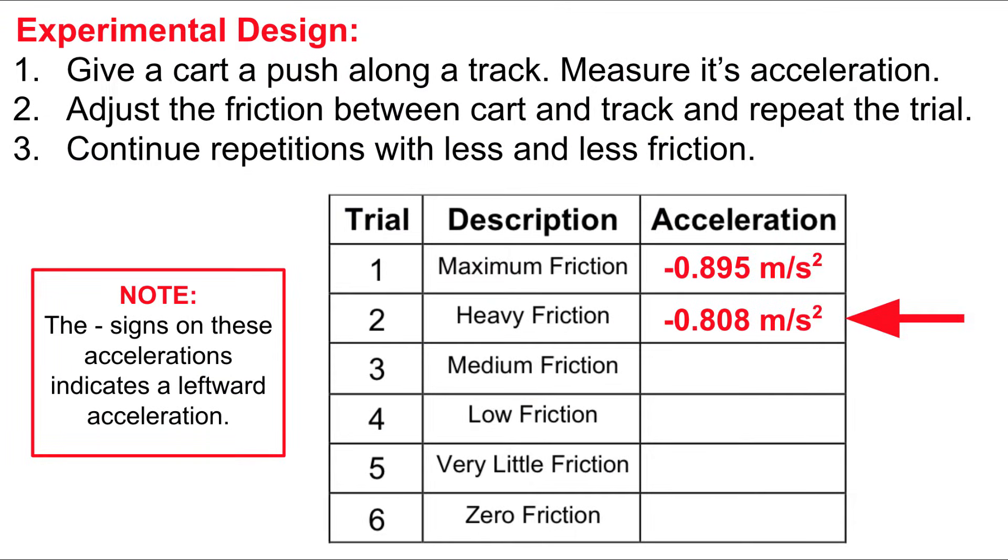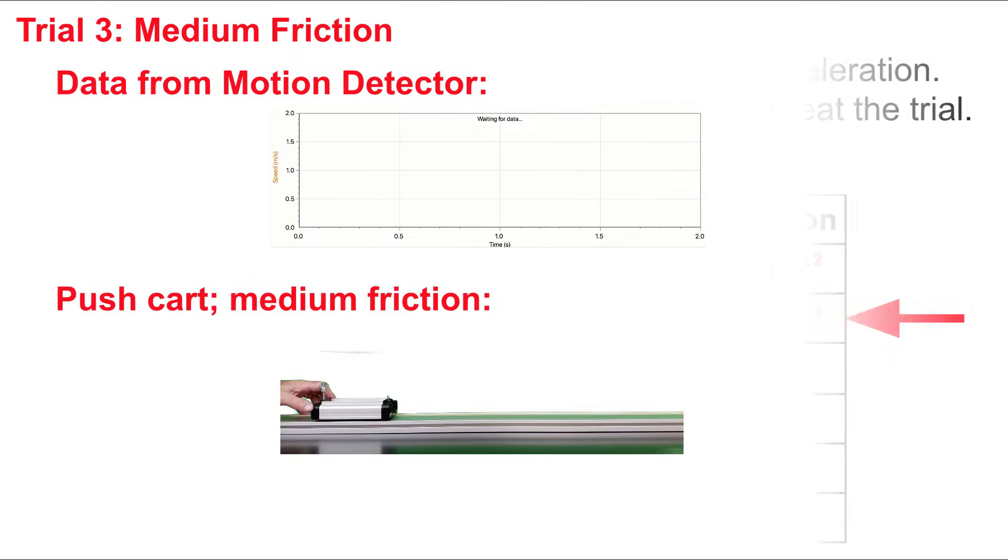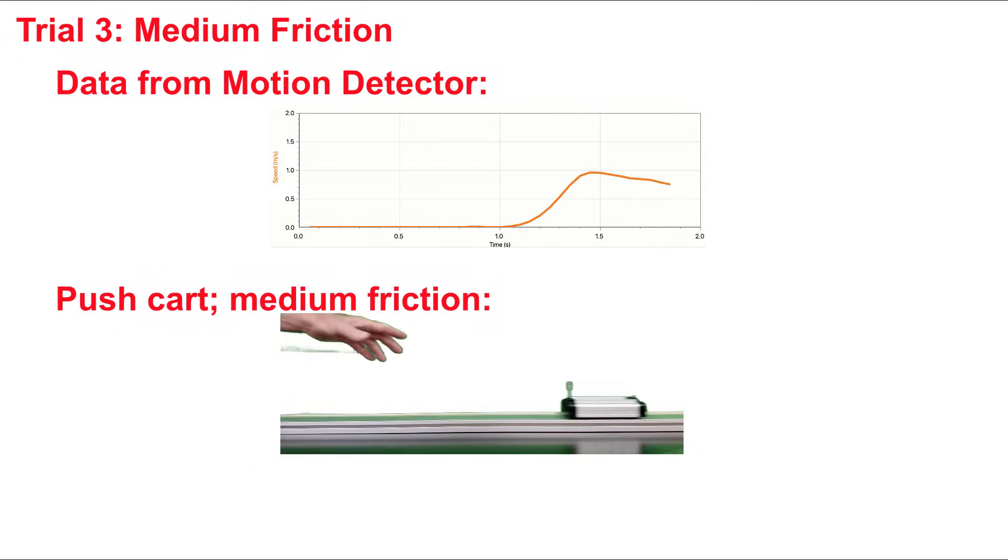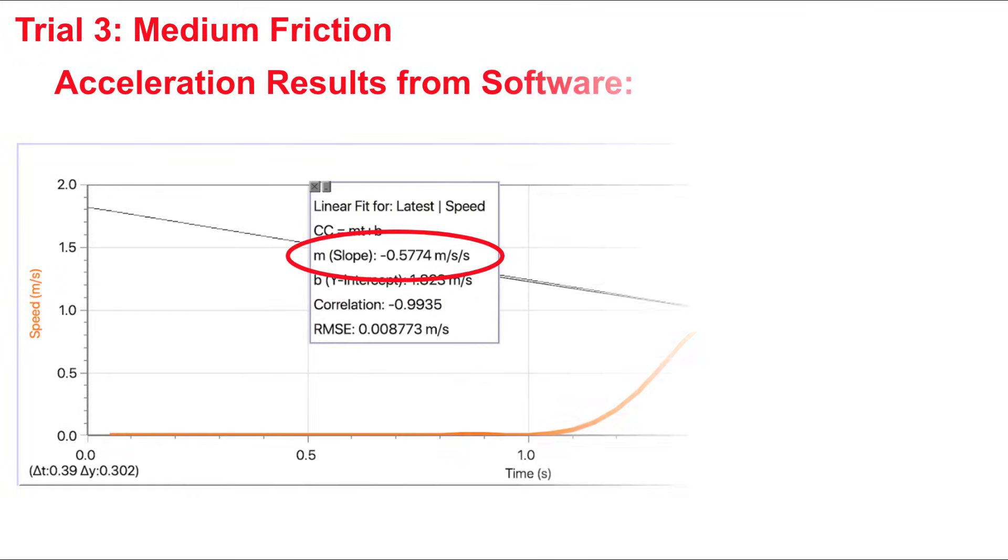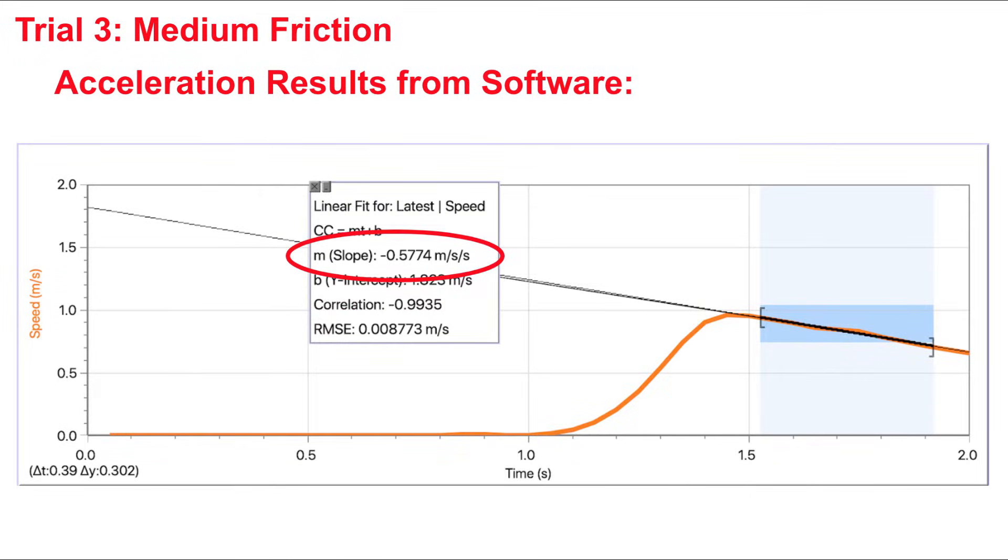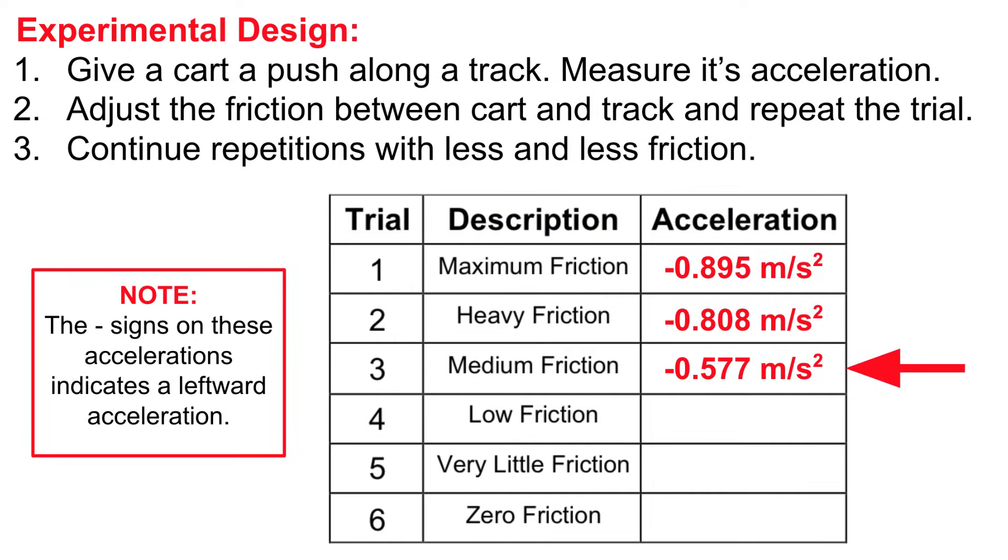We'll adjust the friction to a little less friction now, medium friction, and conduct the trial. With medium friction, the acceleration is negative 0.577. We'll enter that into our table.